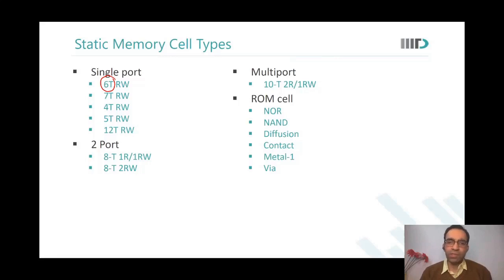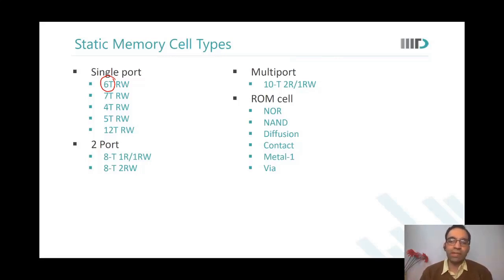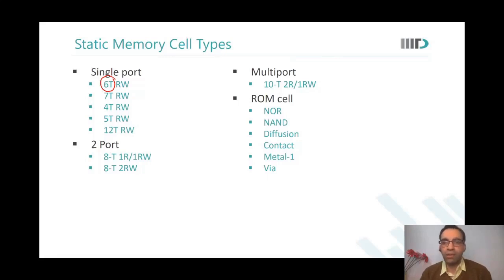This is important so that you understand when you read some technical paper, you should know what this means. So 6T, 7T, 4T, 5T, 2T, 10T, 8T — all this means how many transistors are in the memory cell. For a DRAM, we would call 1T1C, that is one transistor, one capacitor. For a MRAM, you may simply call 1T1R. For RRAM, you may call 1T1R and stuff like that.